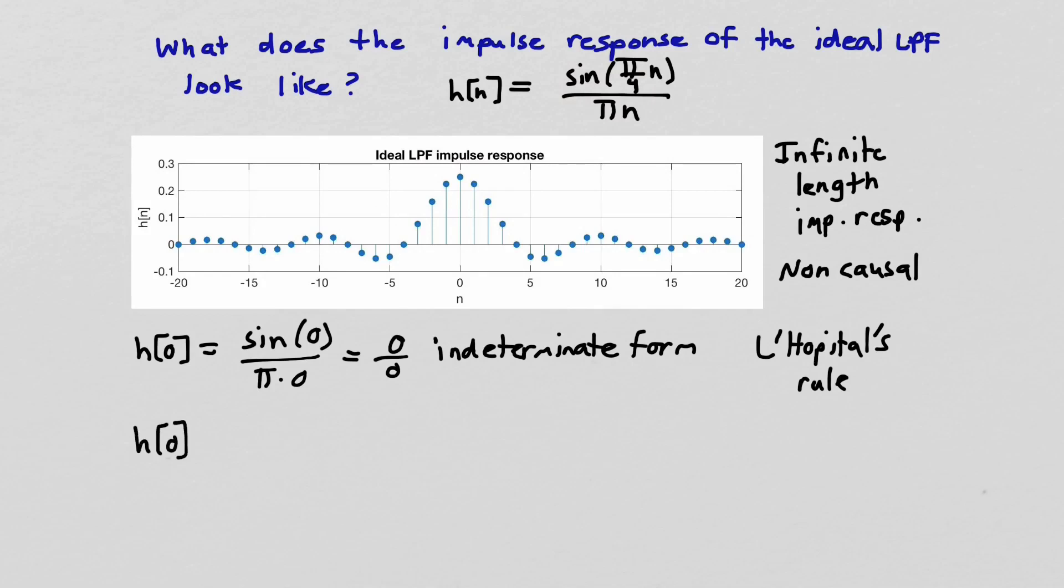And so we do that. We can rewrite h[0] is going to be the derivative with respect to n of the numerator, so the d/dn of π/4·n over the derivative with respect to n of the denominator. And then we evaluate that at n=0. So the derivative of sine is cosine. So we get cos(π/4·n) times π/4, because when we take the derivative, we also have to take the derivative of the inside, and the derivative of π/4·n is π/4, and the derivative of the denominator, which is just π. And then we evaluate that at n=0.